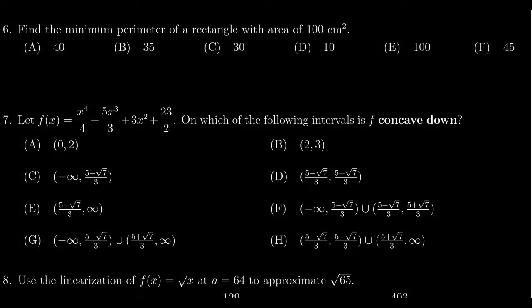In this video, we provide the solution to question number six for practice exam number four for Math 1210, in which case we're asked to find the minimum perimeter of a rectangle with an area of 100 square centimeters.